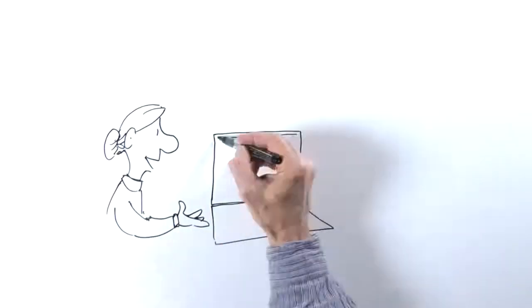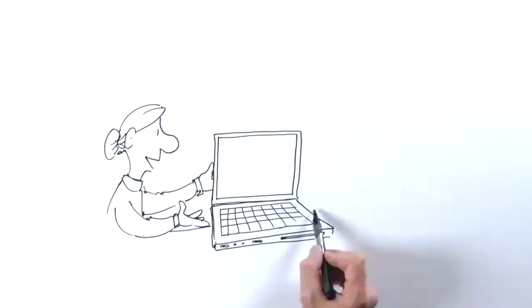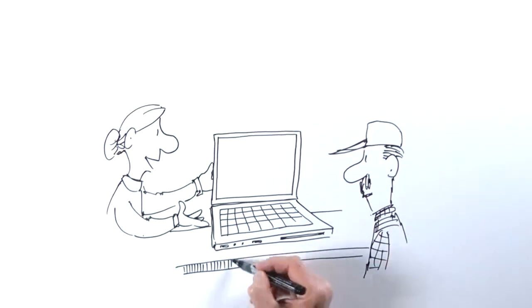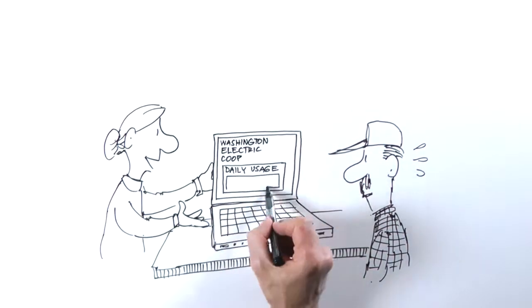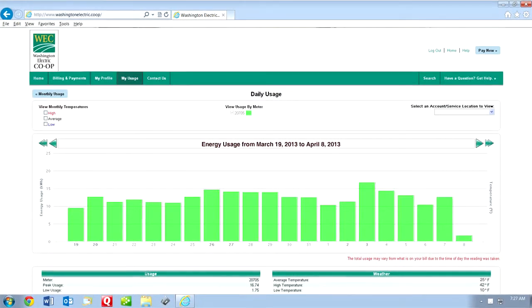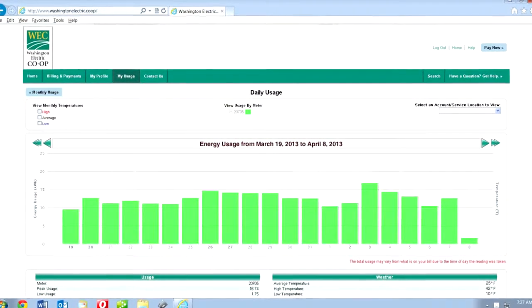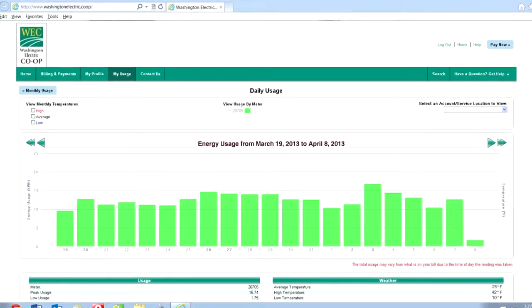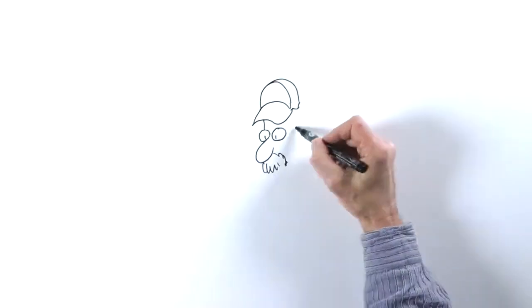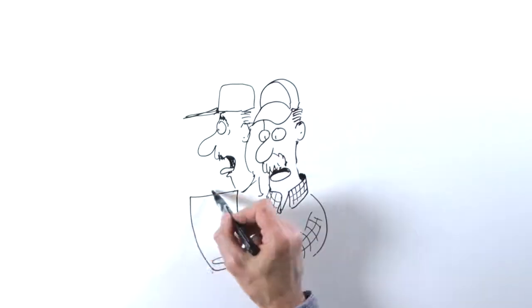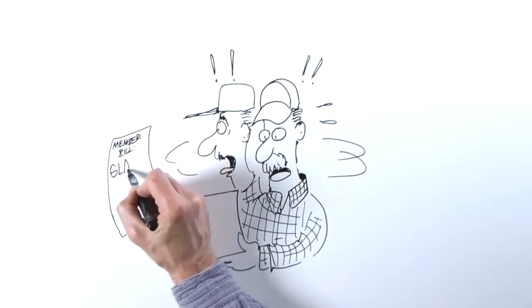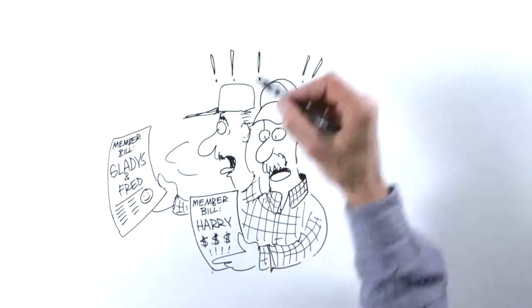Opening her laptop computer, Gladys showed Harry how she uses the co-op's website to review her account. There's even a way to find out how much electricity your family is using per day. If their charges are higher than what they want them to be, they've found this is a good way to help them figure out why. Comparing the daily use average on his bill to Gladys and Fred's, Harry could see that his neighbors were using a lot less power than he was. So he asked what their secret was for saving so much money.